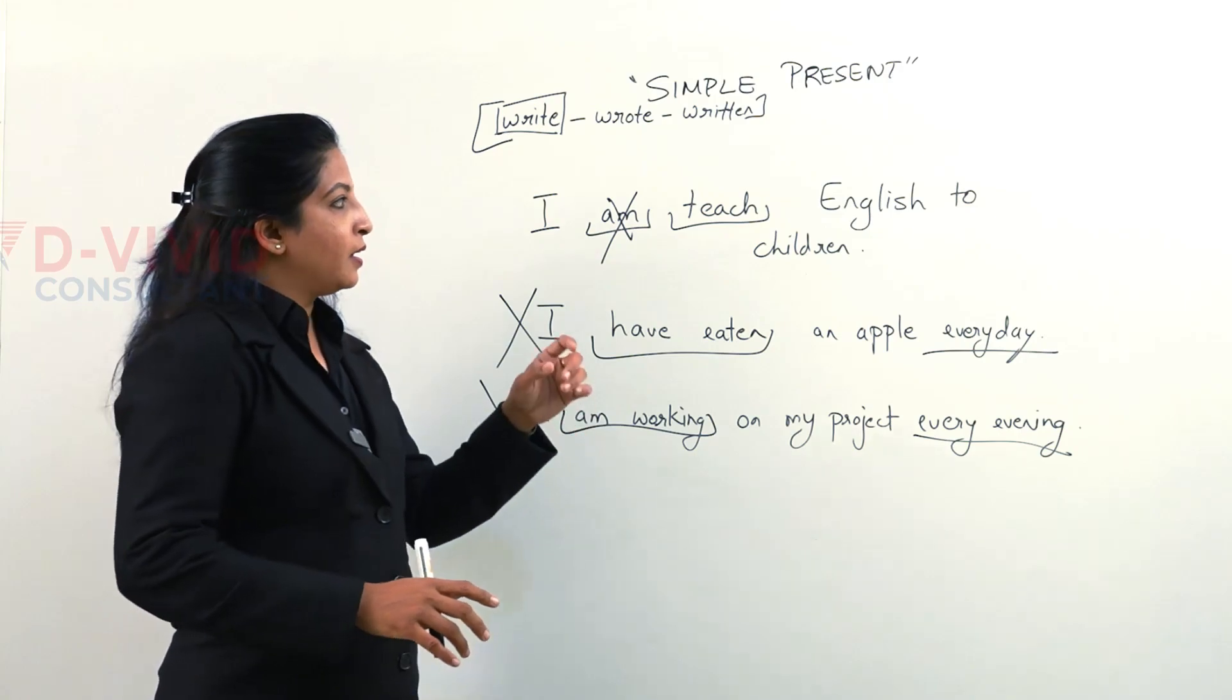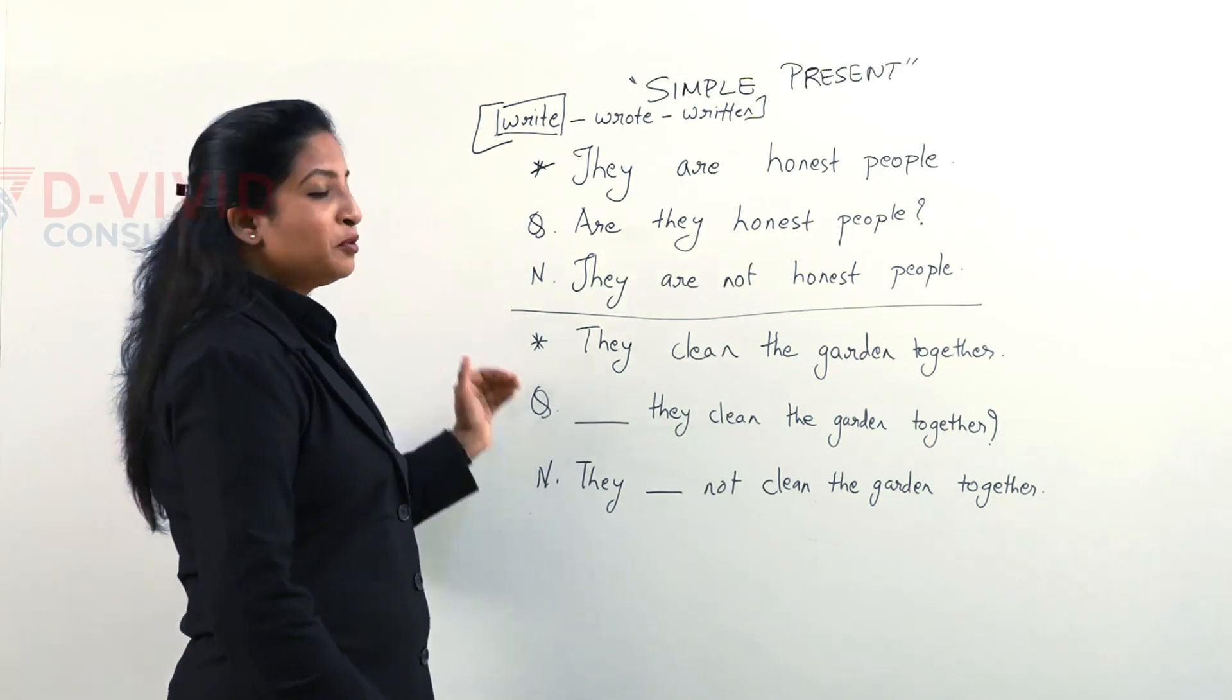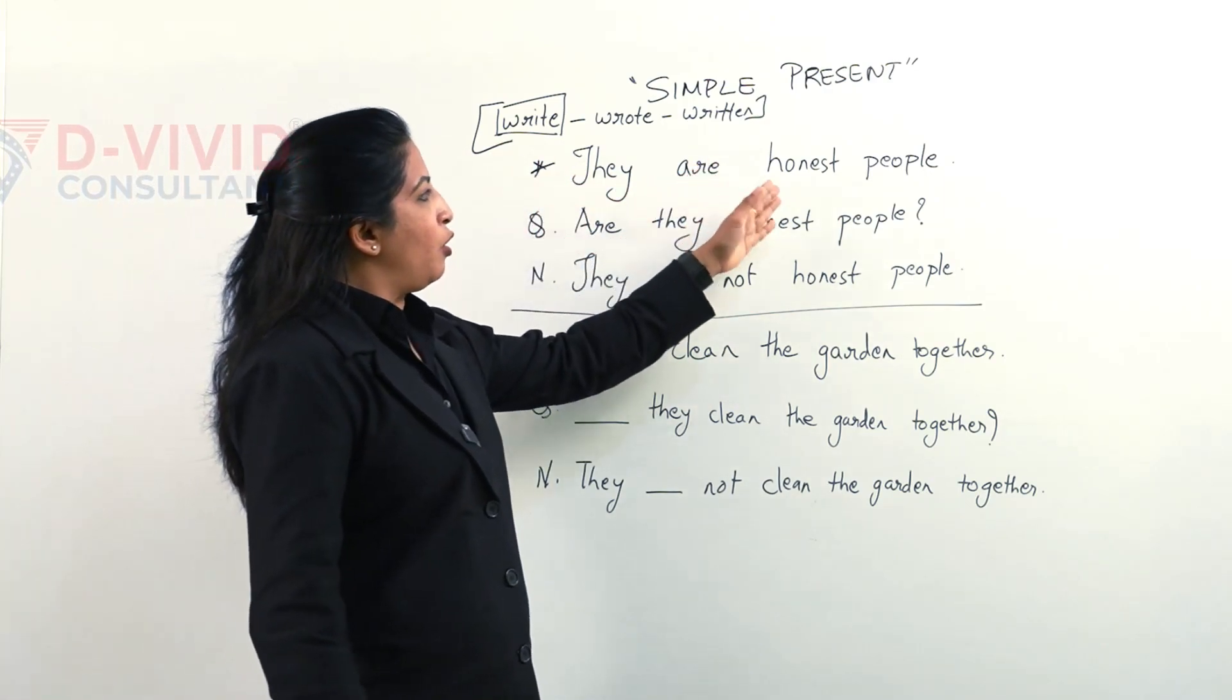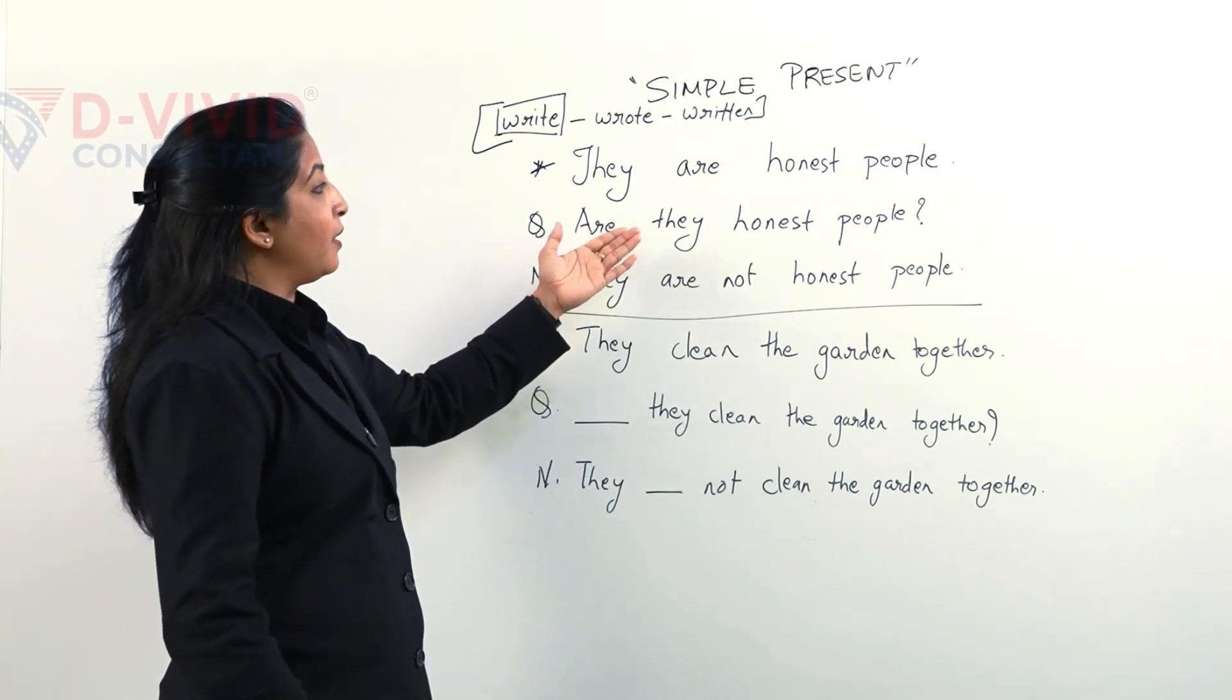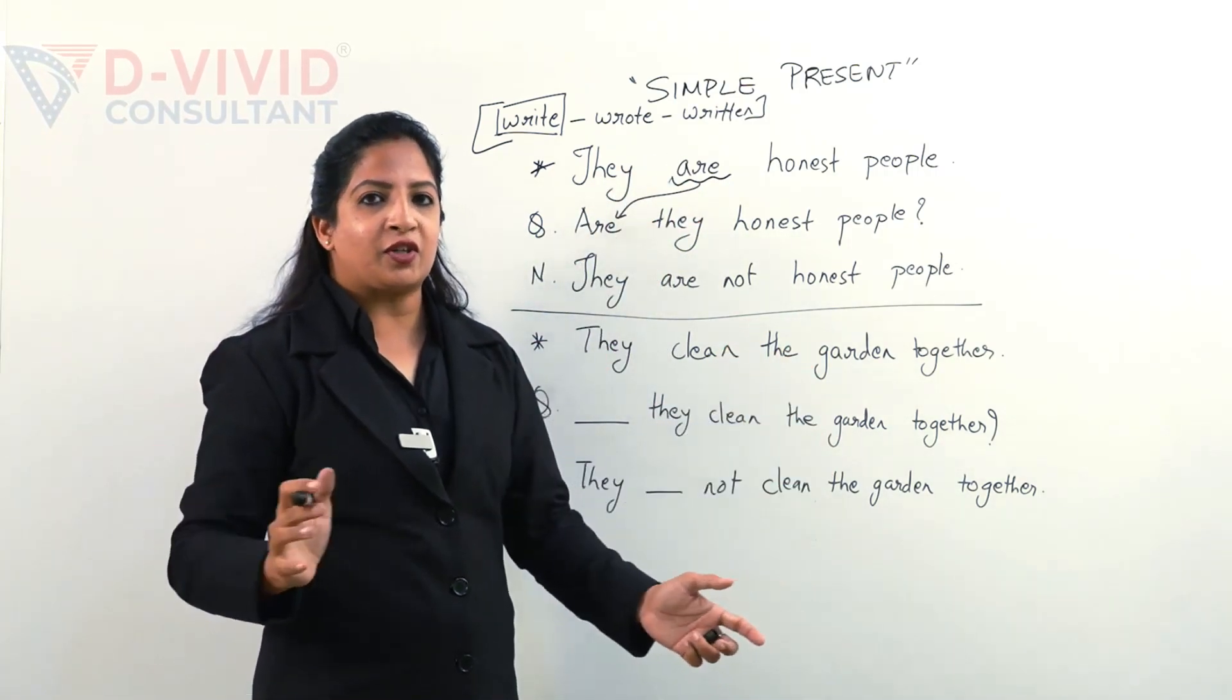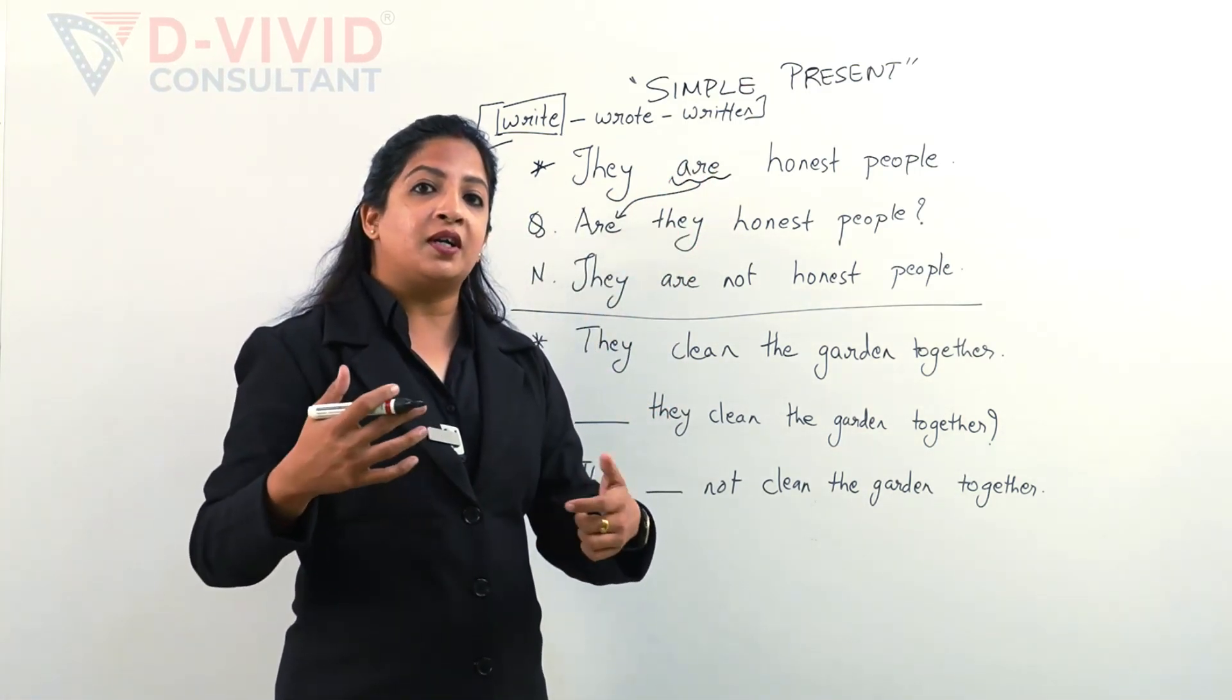Further let us see the interrogative form and the negative form of this tense. I have written two sentences and I have tried to explain you how to convert them. If you closely look they are totally different. They are honest people. Now if I am converting this into a question it should look, are they honest people?